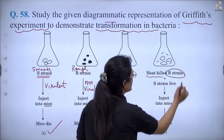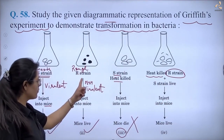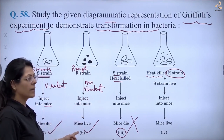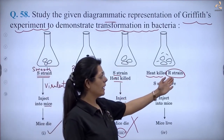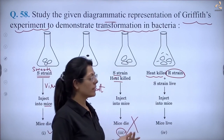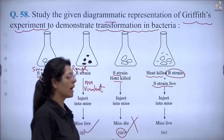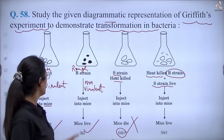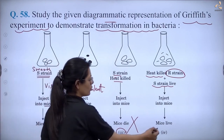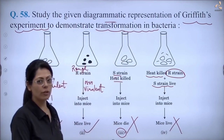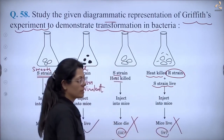Similarly, if it is a heat-killed R strain — the rough strain is heat-killed, meaning the non-virulent strain is heat-killed — it makes no difference. If it is heat-killed, the mice will still live inside it. But here you have also added a live S strain, meaning the live virulent form is added. So the mice should not live — mice should die. So the third and fourth options are both incorrect.